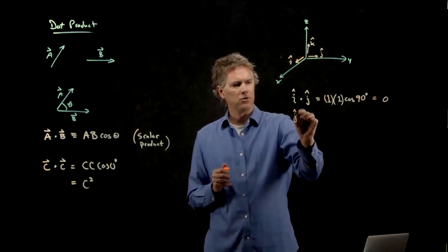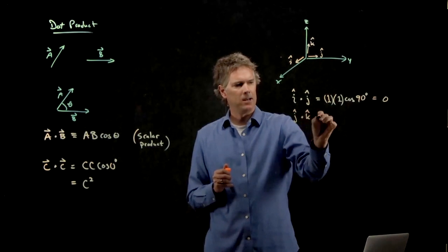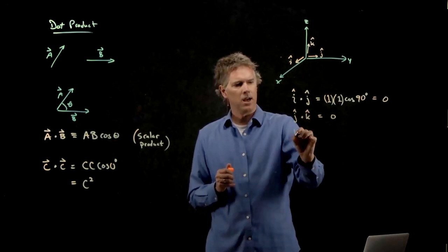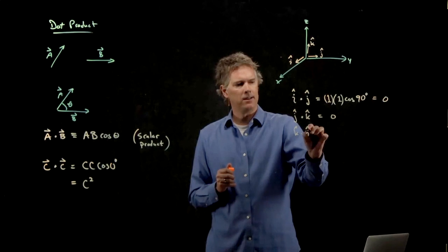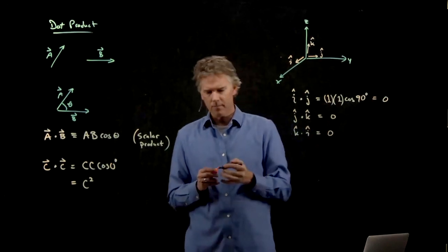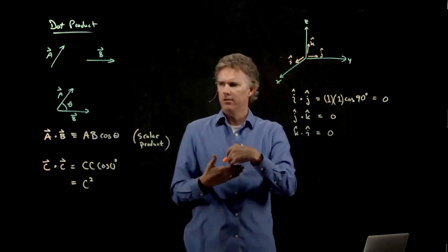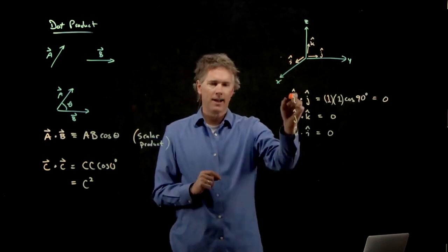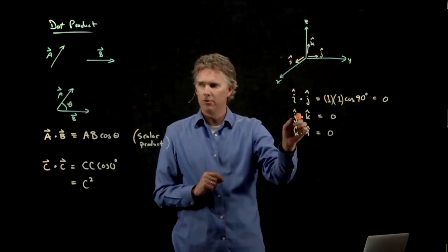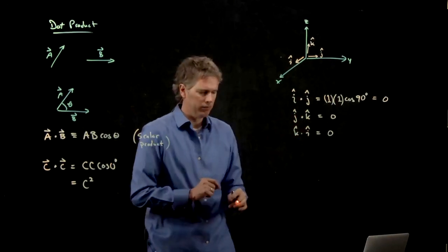Likewise, j-hat dot k-hat is zero. k-hat dot i-hat is zero. It's good to remember these things because when you do dot products between vectors, it's going to simplify quite a bit because a lot of those terms are going to be zero.